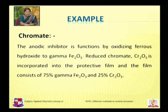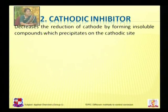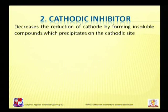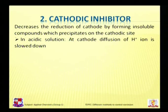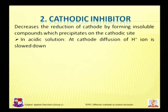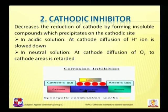The second type is cathodic inhibitor. Cathodic inhibitors act by forming insoluble compounds which precipitate on the cathodic side, decreasing the reduction reaction at the cathode. In acidic solution, diffusion of hydrogen ions (H⁺) takes place; when a cathodic inhibitor is added, it forms an insoluble compound that precipitates on the cathode and stops the diffusion of H⁺ ions, slowing corrosion. In neutral solution, diffusion of oxygen takes place; when a cathodic inhibitor is added, the diffusion of oxygen is retarded. Both cathodic and anodic inhibitors are illustrated in the example shown.